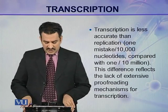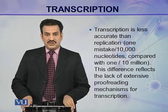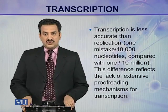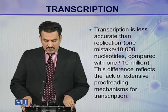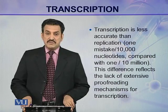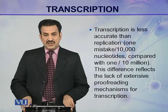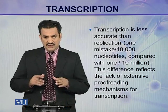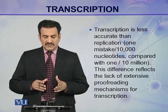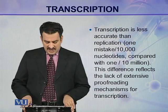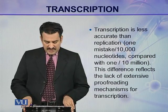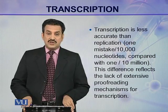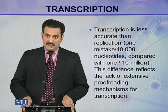Transcription is less accurate than replication. There is one mistake in 10,000 nucleotides in case of transcription, while there is only one mistake per 10 million nucleotides in case of replication. This difference in accuracy reflects the lack of an extensive proofreading mechanism during transcription, whereas there is a very good proofreading system in case of replication.